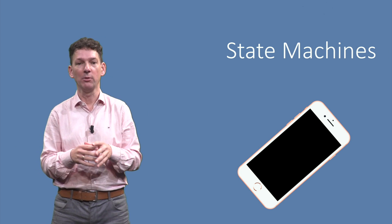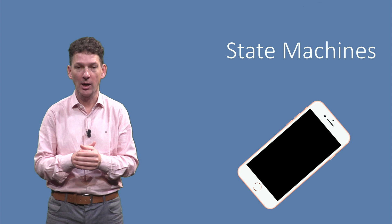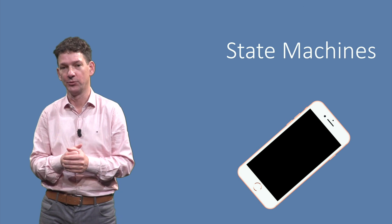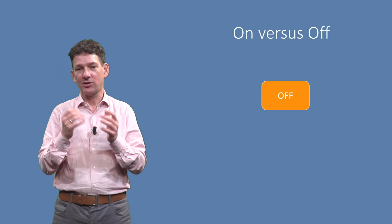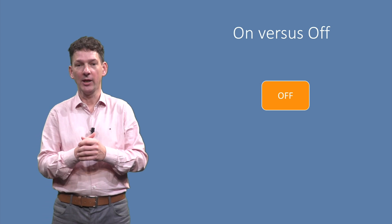For example, your phone can be switched off, in standby mode or in actual use. Let's try to model that behavior using a state machine.